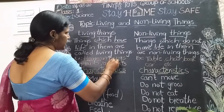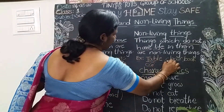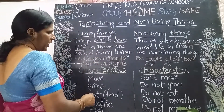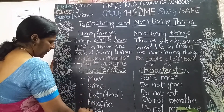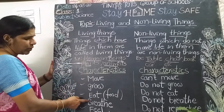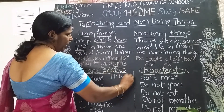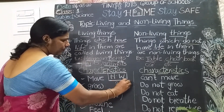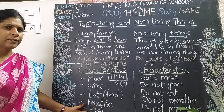What are human beings, plants, animals, table, chair? Living things and non-living things. Write move, grow. Homework for you: write each word two times. Write all these words two times. Okay children, bye.